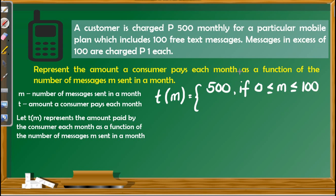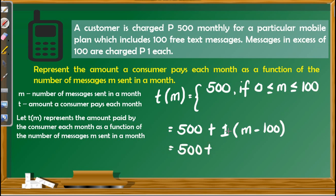For the second function, messages in excess of 100 are charged P1 each. So aside from paying P500, there is an increase of P1 for every excess message: P500 plus the excess. The excess number of messages is M minus 100 — the highest value in the domain of the first function. Simplifying: 500 plus 1(M minus 100) gives us M plus 400 as the second function.